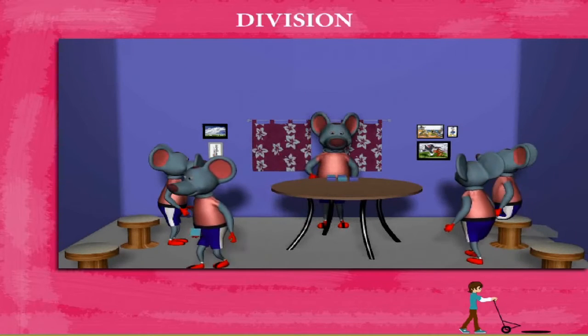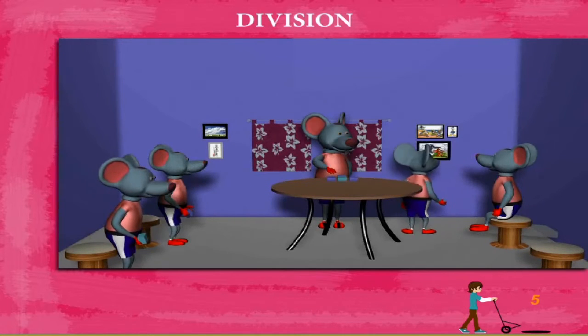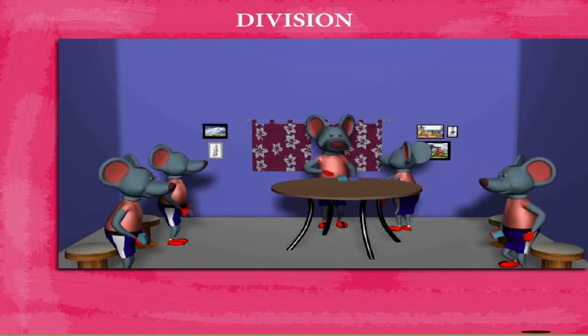Robby calls them one by one and gives them one candy box each. After they all receive one candy box each, Robby has three boxes left. Good show, Robby.